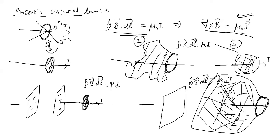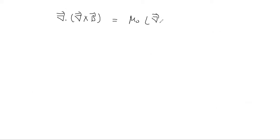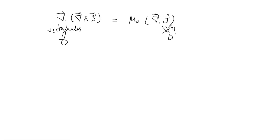This is what we discussed in the previous class: if you take the divergence of the equation derived from Ampere's Circuital Law — del cross B equals mu naught J — then del dot del cross B equals mu naught del dot J. From vector rules, the scalar triple product del dot del cross B is always zero, but del dot J might not be zero universally, and that is why Ampere's Circuital Law breaks down.